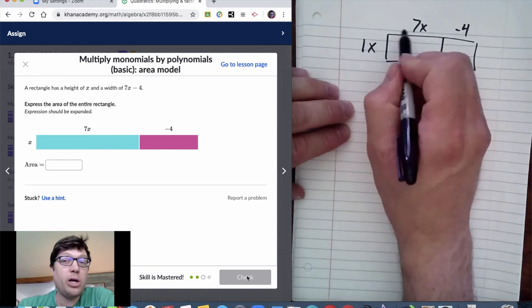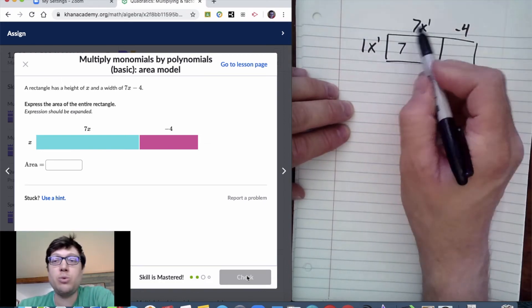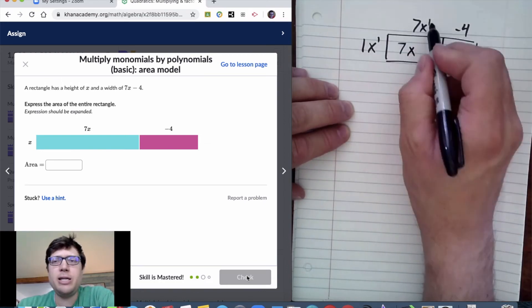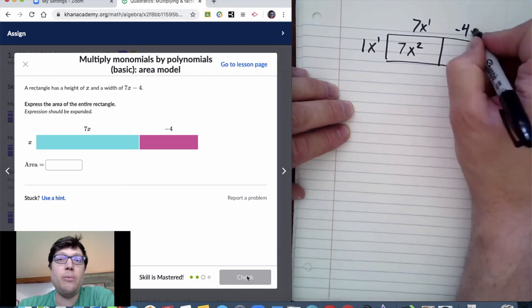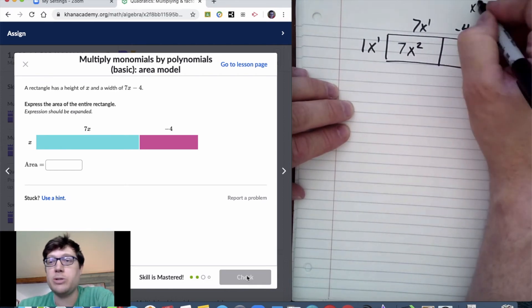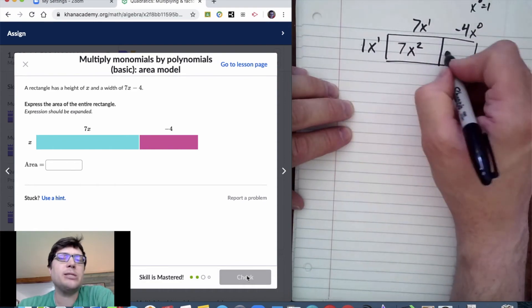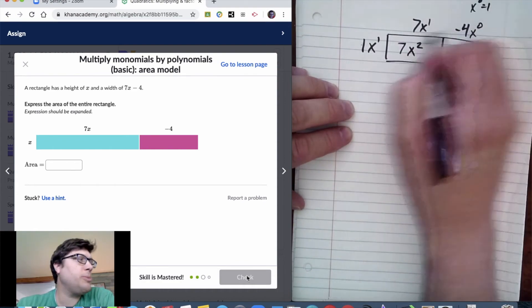There's a 1 coefficient for the x, so 7 times 1. The x also has an exponent of 1, and you add exponents when you're multiplying, so 7x². Technically, the 4 has x to the 0, we still multiply.